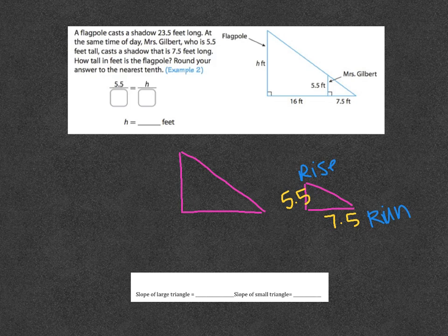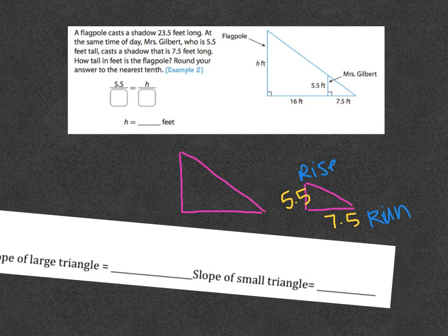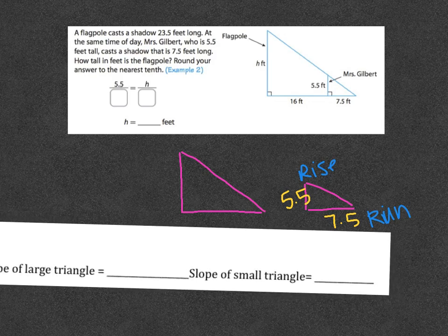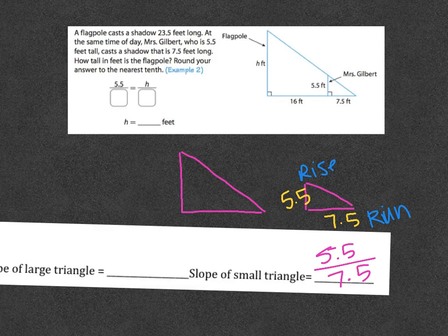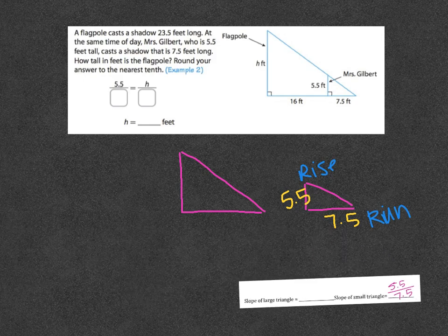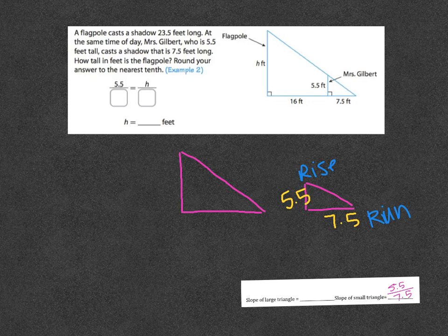I could fit that on my line for kids in my class who have this as their assignment. The small triangle is 5.5 over 7.5. Okay, I don't know the large one yet because I'm missing the height of the entire flagpole, which is what I'm trying to do. In this question, they actually have set up a proportion right here and they're telling me to put the two fractions together. So, 5.5 was Ms. Gilbert.